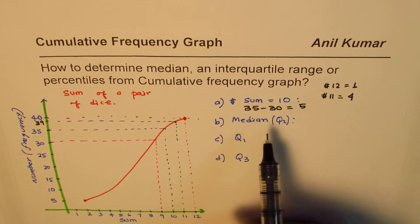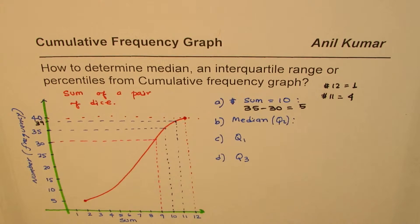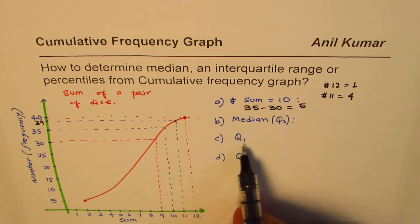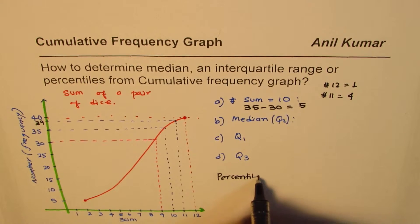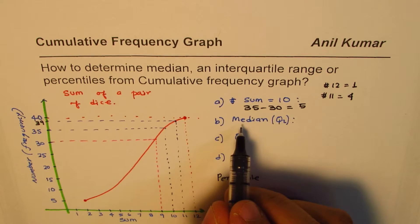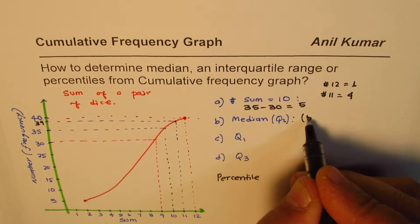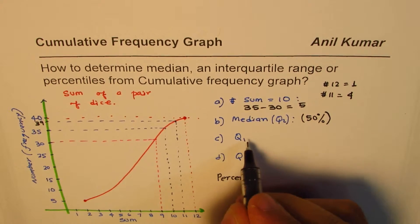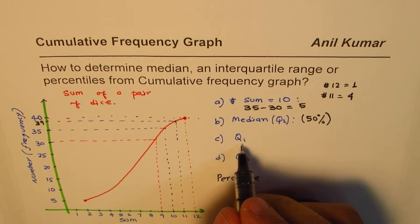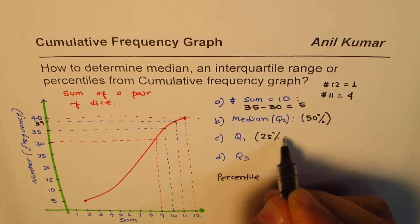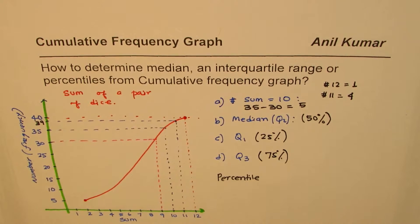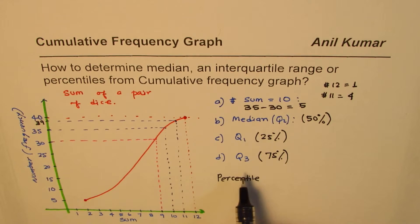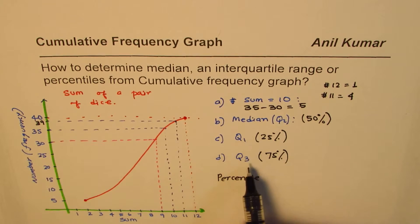So during this experiment performed 40 times, we got a sum of 10 exactly 5 times. We can do reverse calculations to build the full frequency chart from the cumulative graph — that's an exercise for you. Now let's talk about medians. Before getting into medians, we need to understand percentiles. The median corresponds to 50%, the first quartile to 25%, and the third quartile to 75%.